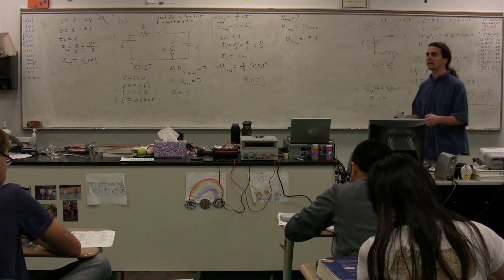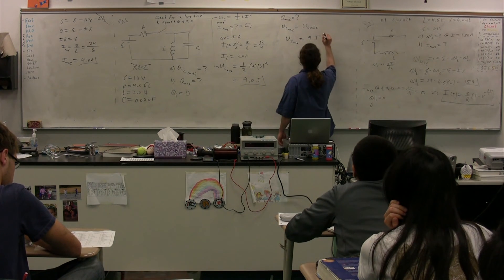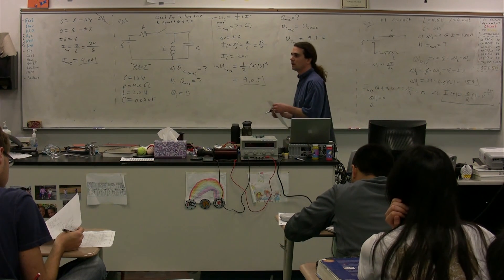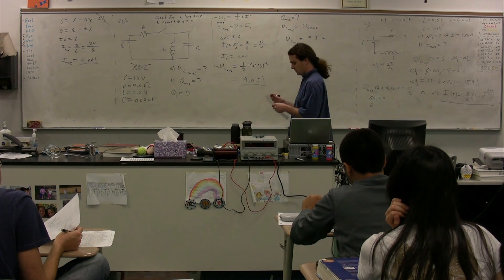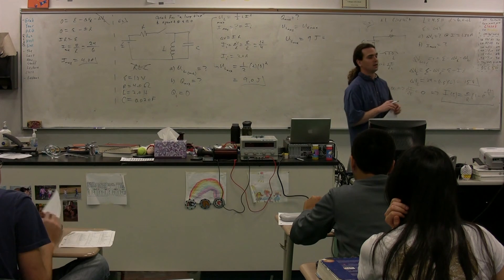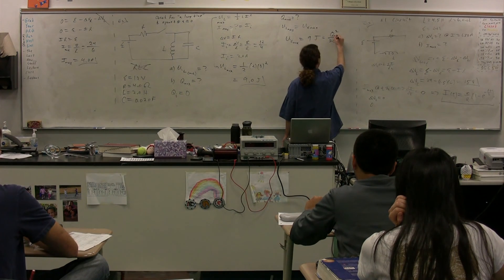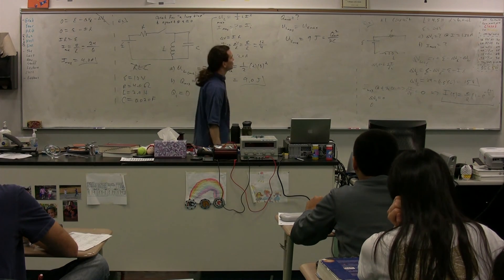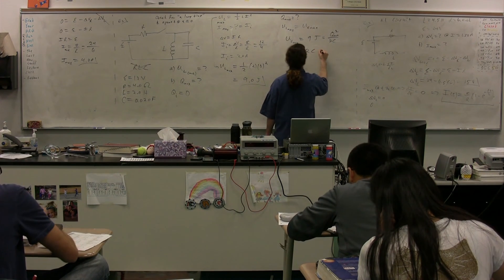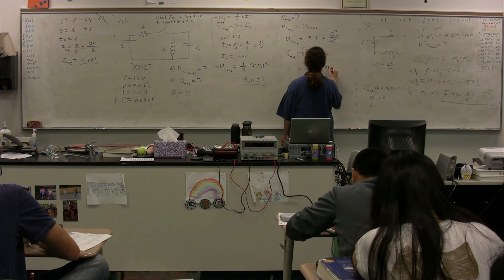What's the equation for the maximum energy stored in the capacitor? It's Q-max squared over 2C. In this particular case, it's the maximum charge squared because we're talking about the maximum energy stored in the capacitor. So Q-max equals the square root of 2 times the capacitance times the maximum energy stored in the capacitor: the square root of 2 times 0.02 times 9.